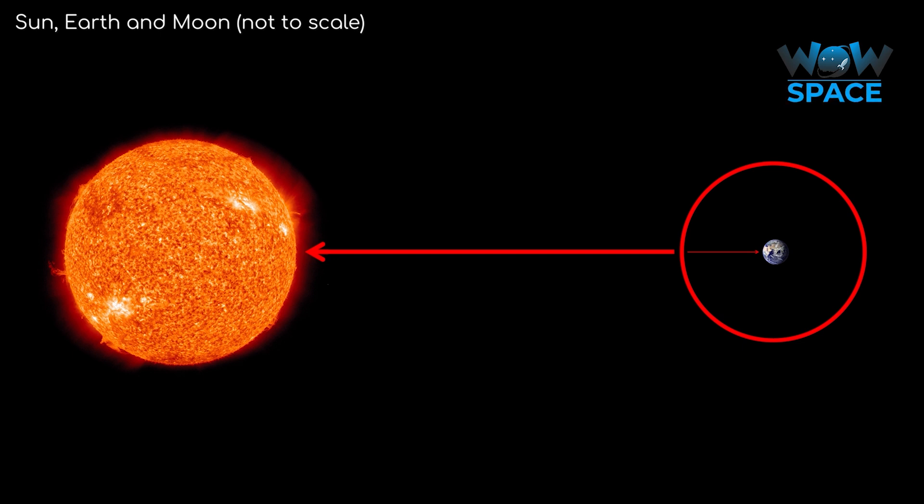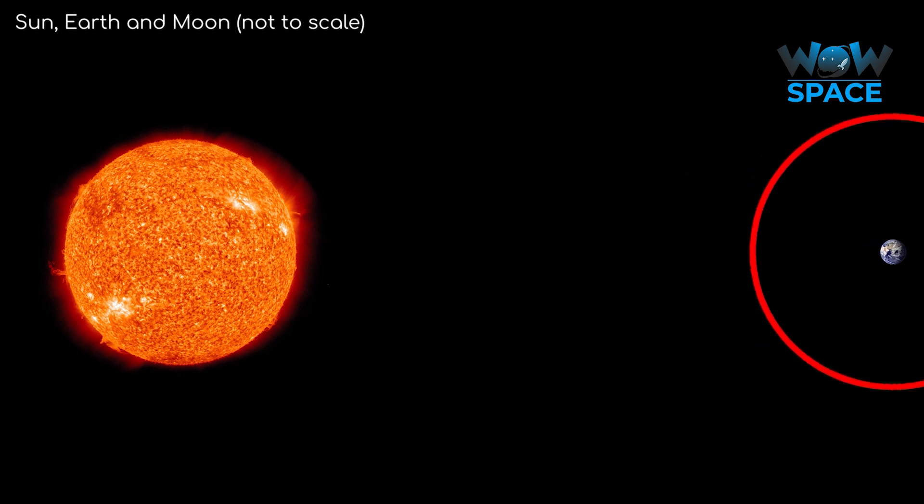This means that the hill sphere around Earth isn't very big, only 1.5 million kilometres. If Earth was closer to the Sun, its hill sphere would be smaller. If it was further away, it would be bigger.